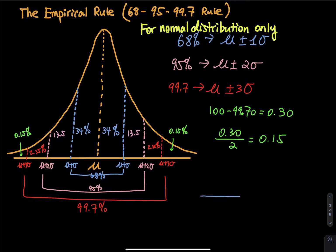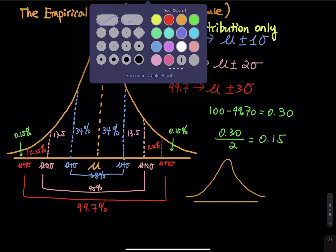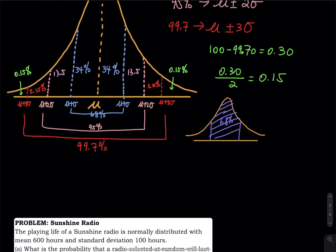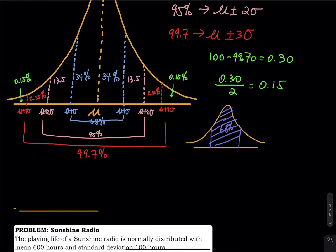Let's draw a picture for each of these. For 68%, you have mu right in the middle with a bell curve, and you take one step to the right and one step to the left — that shaded region is 68%. For 95%, we draw another graph: mu is in the middle, two steps to the left and two steps to the right — that region is 95%.